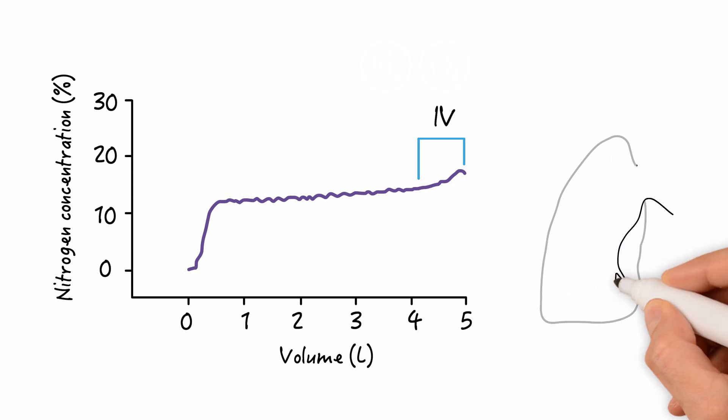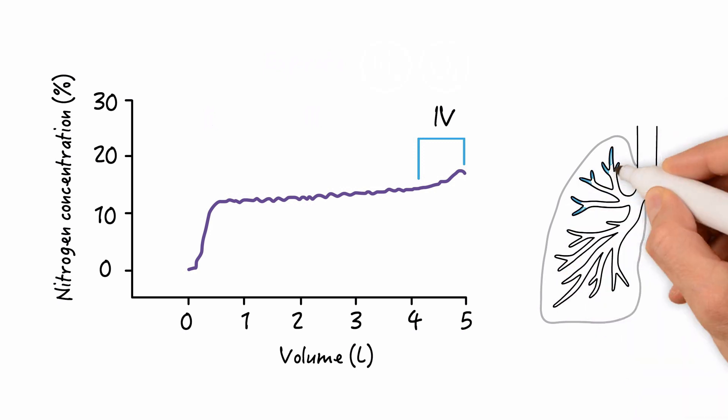And phase 4 constitutes gas arising predominantly from the apices as the airways at the bases close as lower lung volumes are approached.